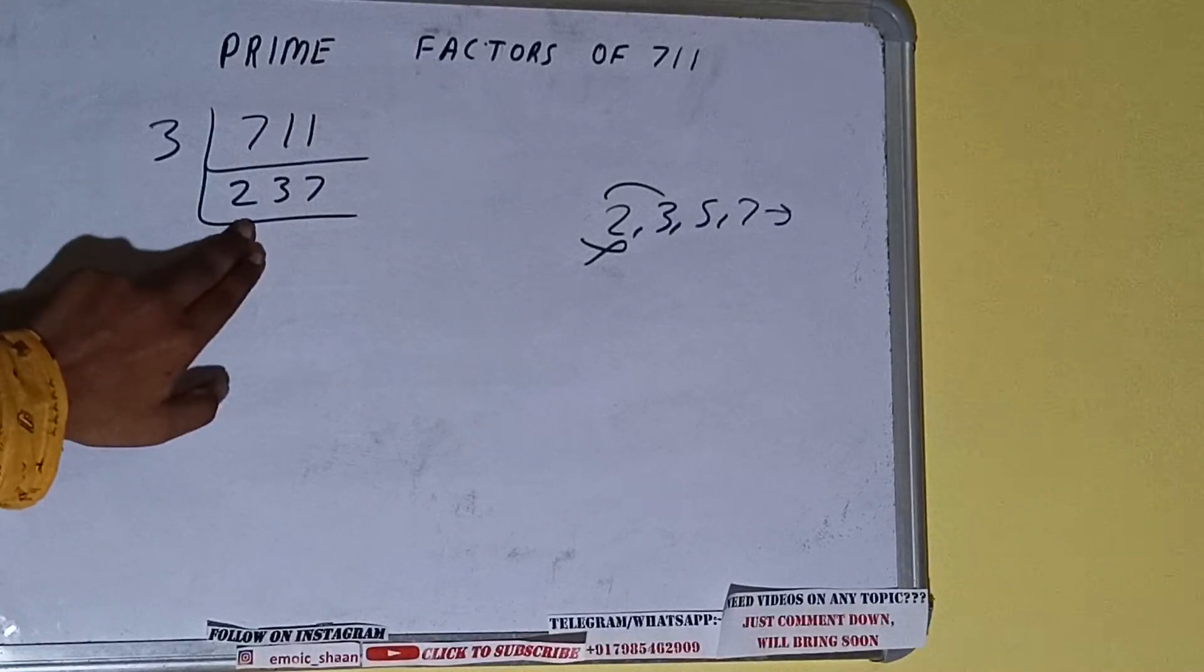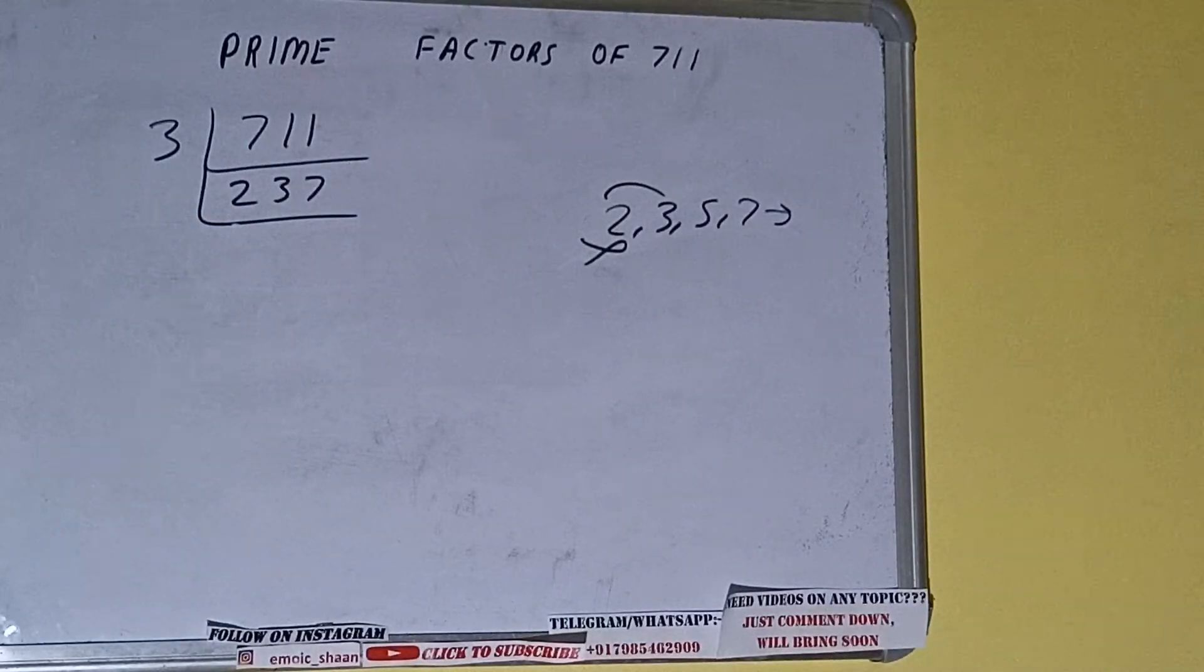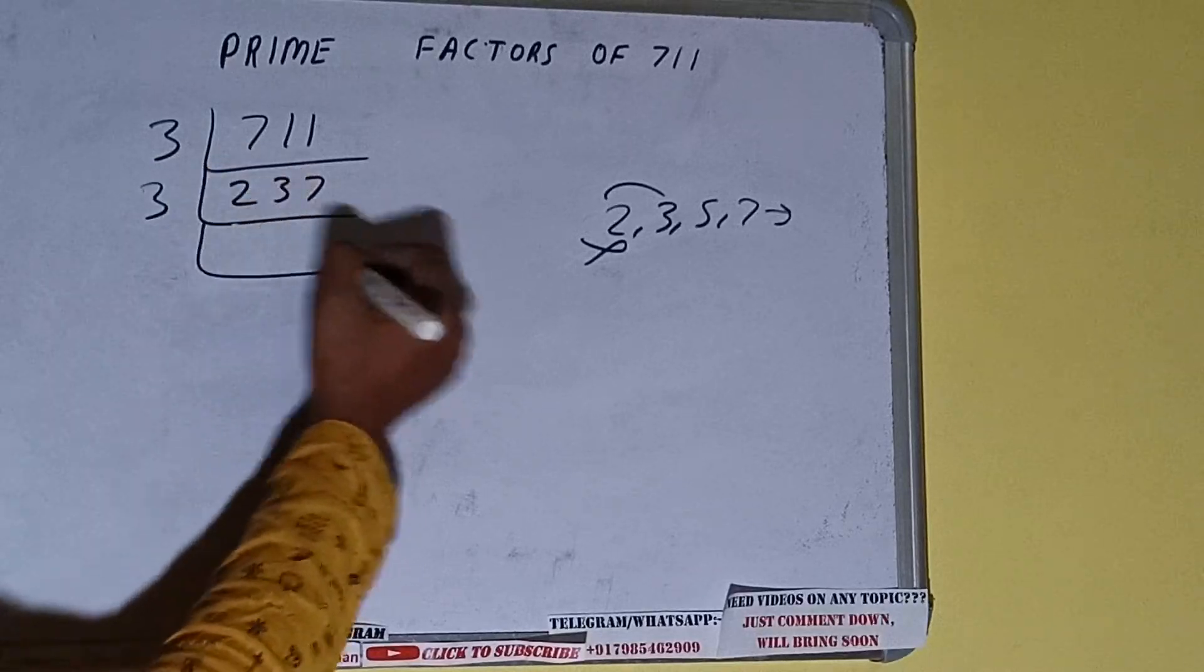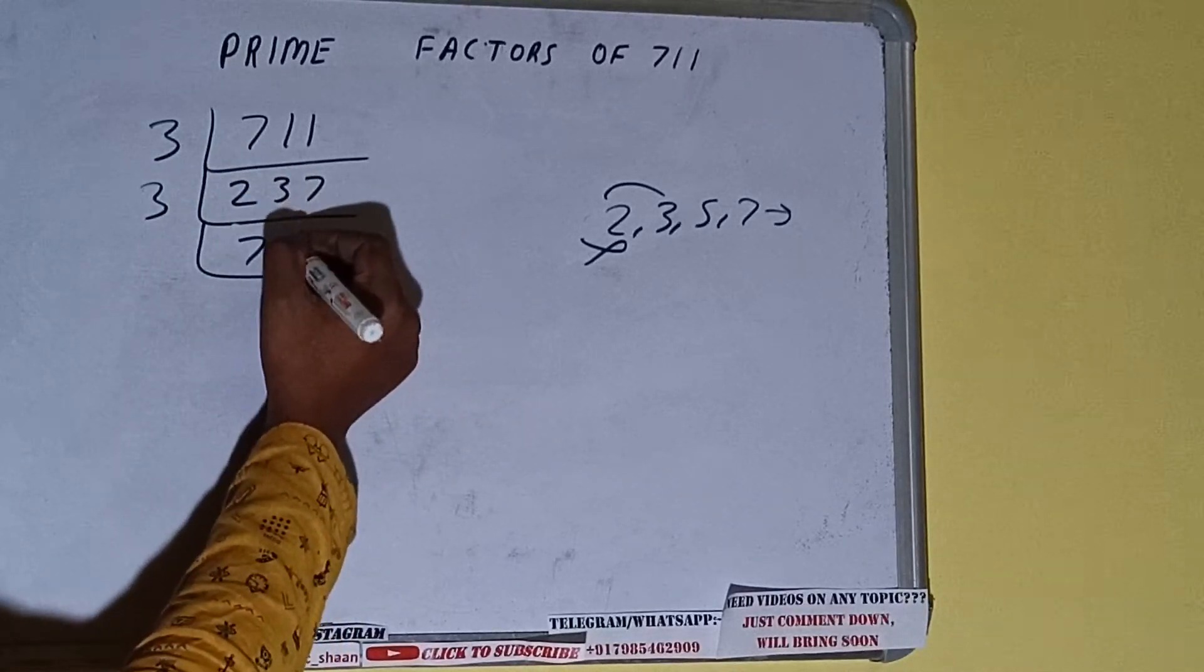3, 7 is 21, 2, 7. Yes, it is divisible by 3. So divide it and we'll be having 79.